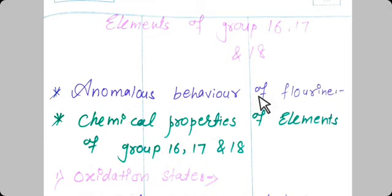Similarly, ionic and covalent radii, melting point, boiling point, and electron gain enthalpy are lower in fluorine than in other halogens. Most reactions of fluorine are exothermic, meaning heat is evolved. Fluorine forms only one oxoacid (HOF), while other halogens form a number of oxoacids. Hydrogen fluoride (HF) is a liquid with a boiling point of 293 K due to strong hydrogen bonding, while other hydrogen halides are gases.